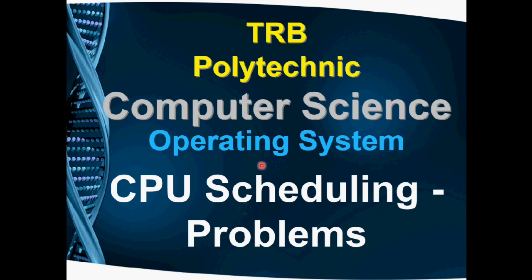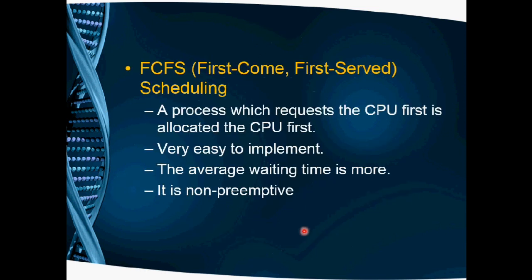Welcome to this video. We are going to see problems on CPU scheduling. In the previous video, we covered the theoretical concepts of CPU scheduling. The first four algorithms we have are FCFS, SJF, Priority, and Round Robin. We will see examples for each algorithm.